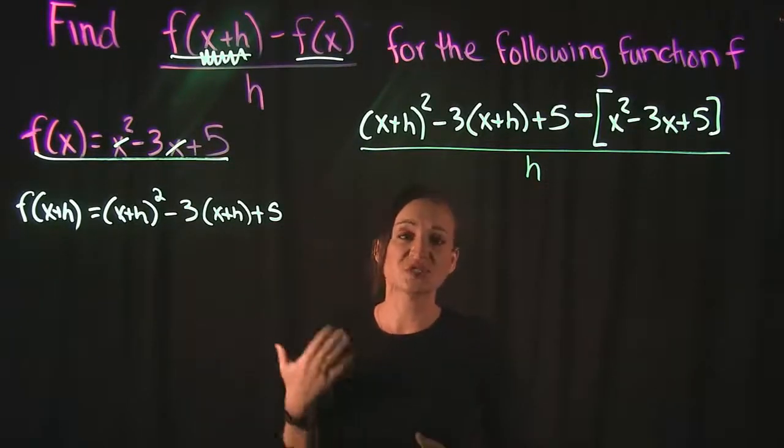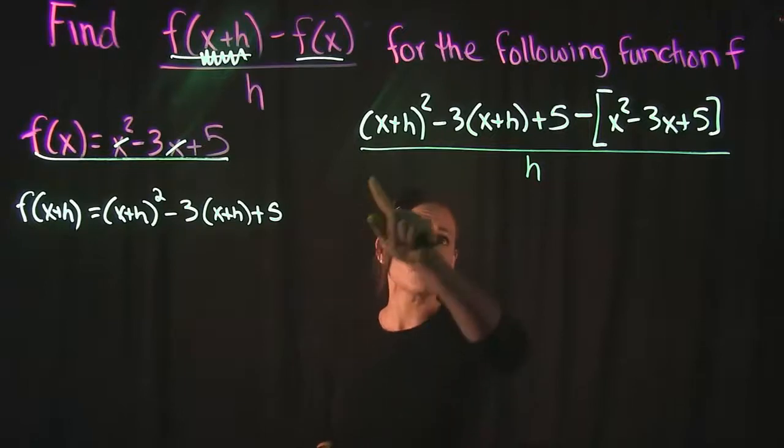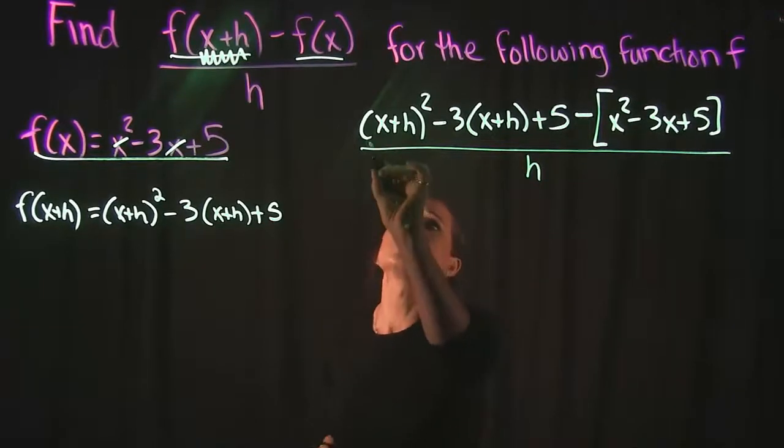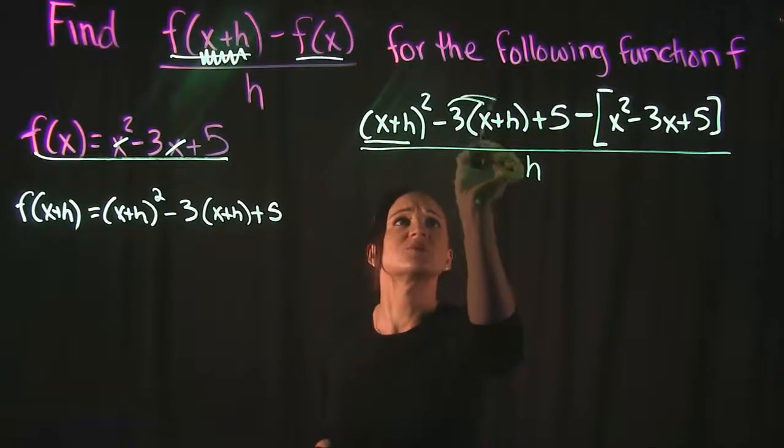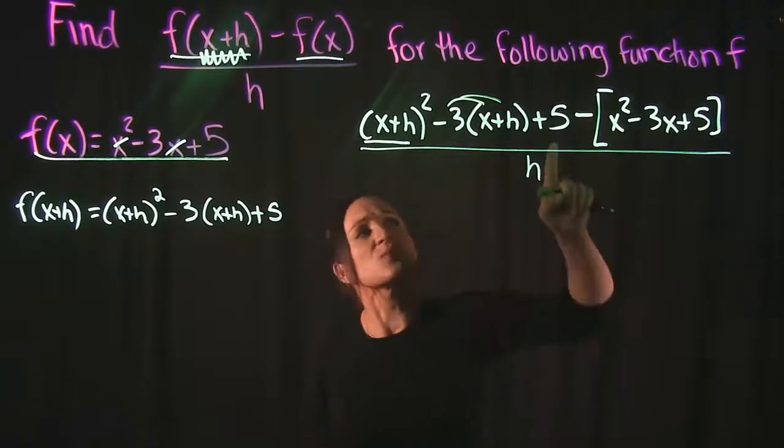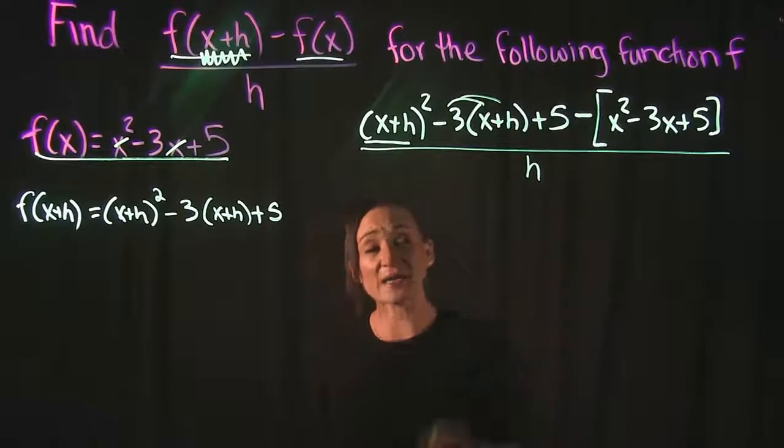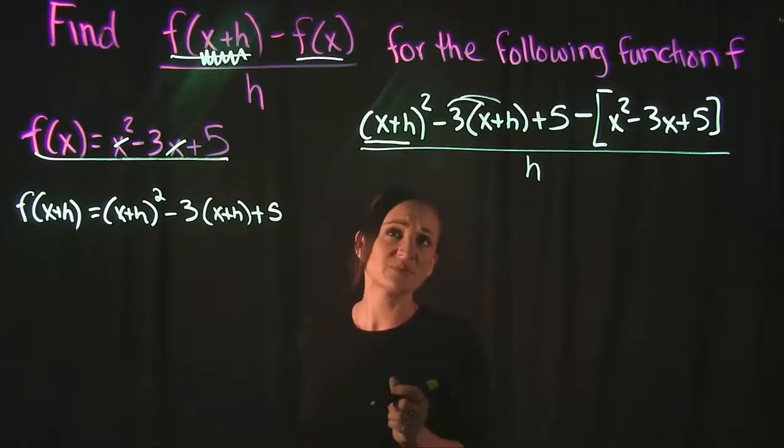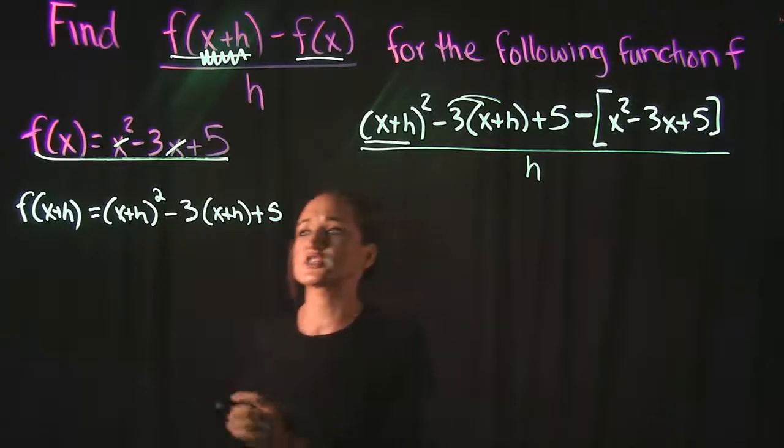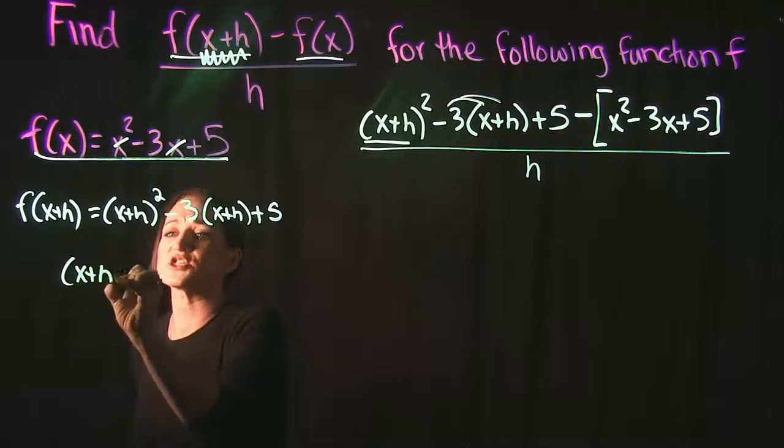Our next step is to do some cleanup here. There's some multiplying going on. We have to square this first one. We have to distribute this negative 3, and then we also have to distribute this minus. So taking this one step at a time. First, we have to square x plus h.